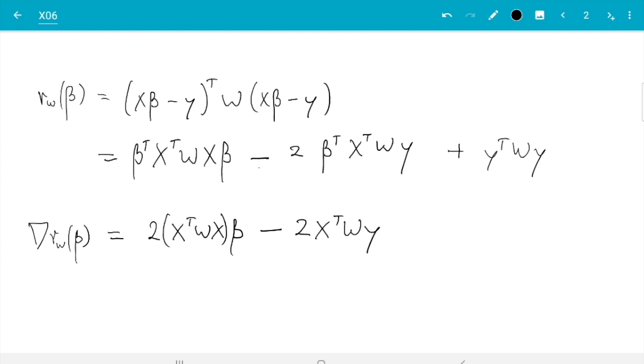Now if we set this equal to 0, then we can bring that one to the other side, cancel the twos, and get XᵀWXβ = XᵀWy. Then we get the formula I wrote in the notes.